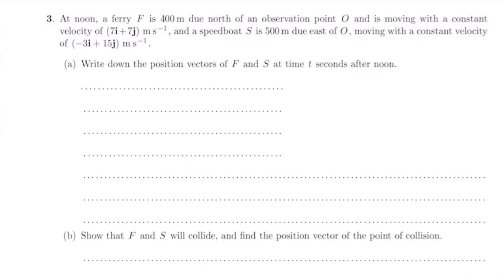The first thing we're going to do is give us a little bit of an idea of what's going on here. If this is my observation point at the beginning, the ferry is here, and from here to here is 400 meters. That's at the beginning, so that's r₀ for the ferry. The speedboat is here, I'll call it S. It's due east, so that's that point there, and this is 500 meters. That's where they are at noon. Now they start to move.